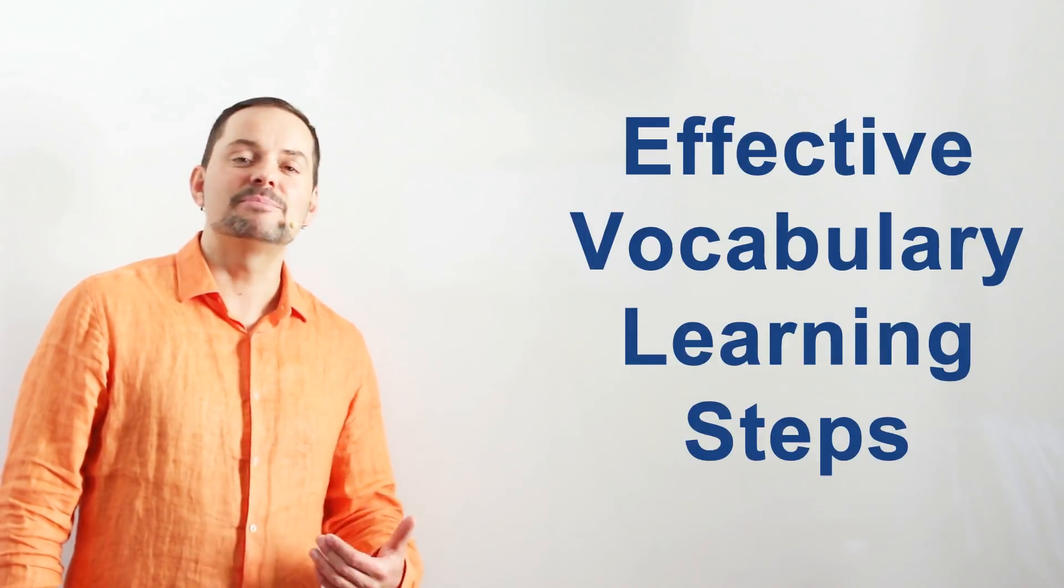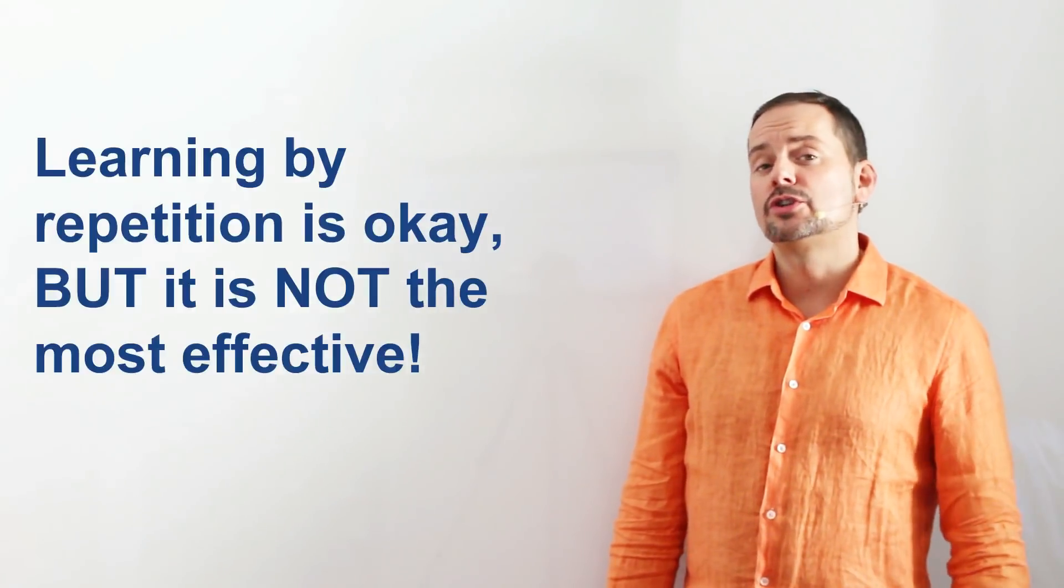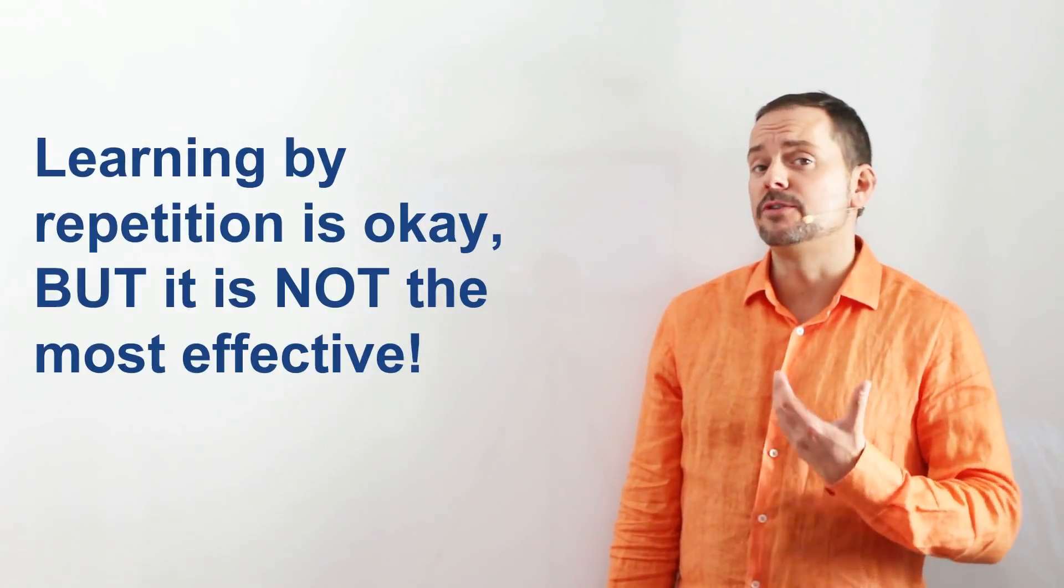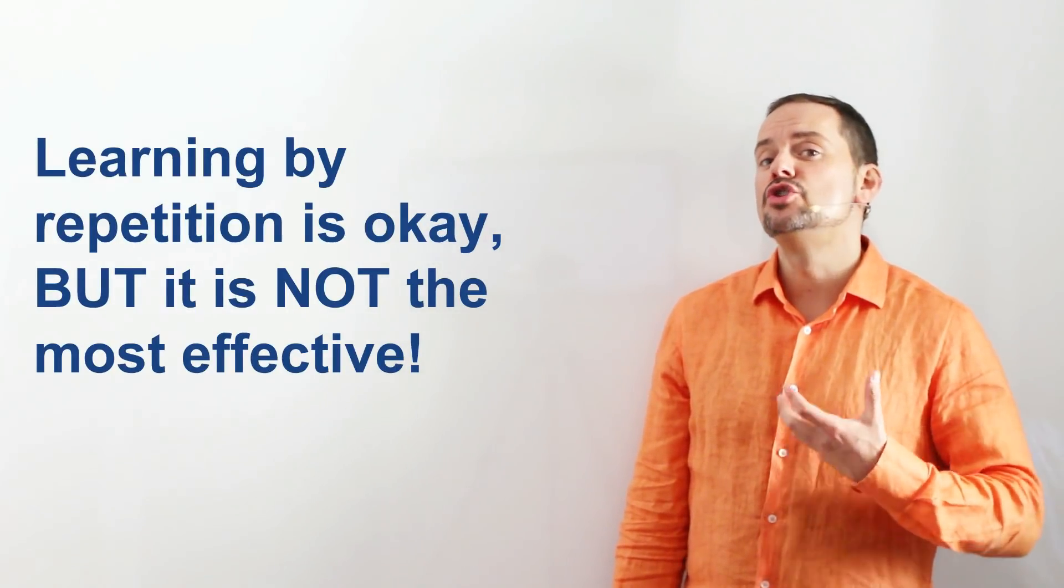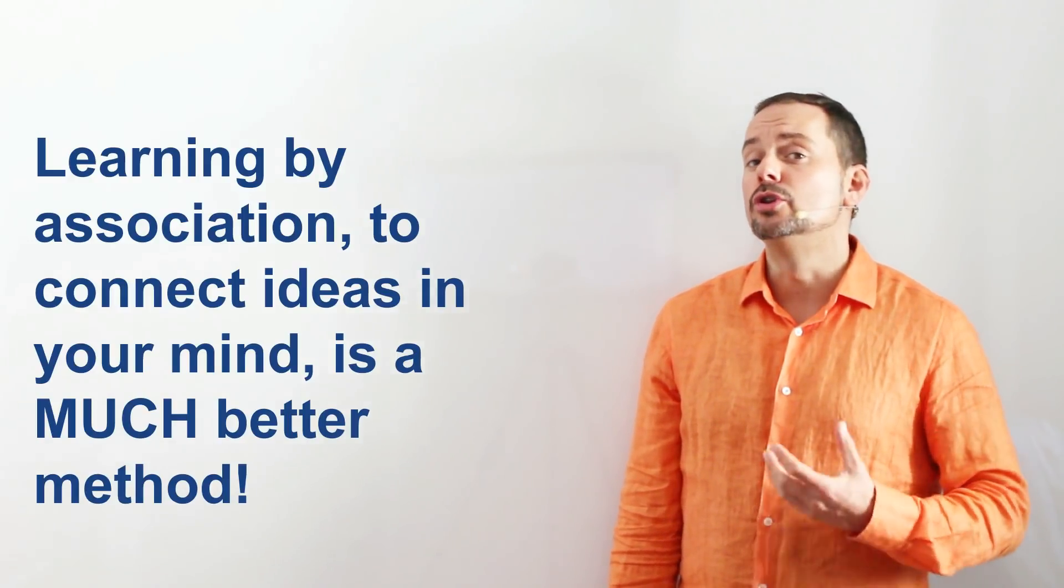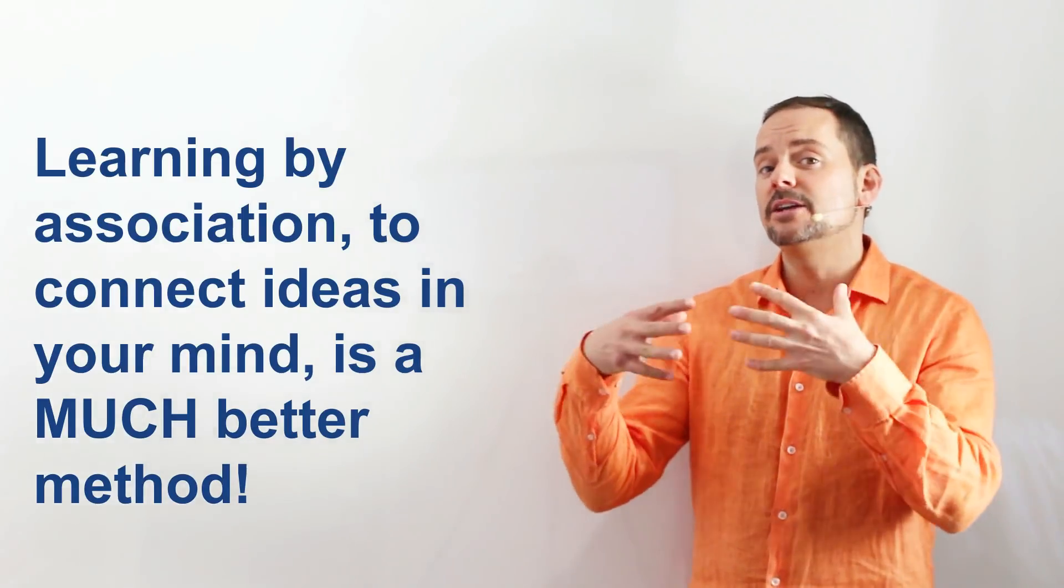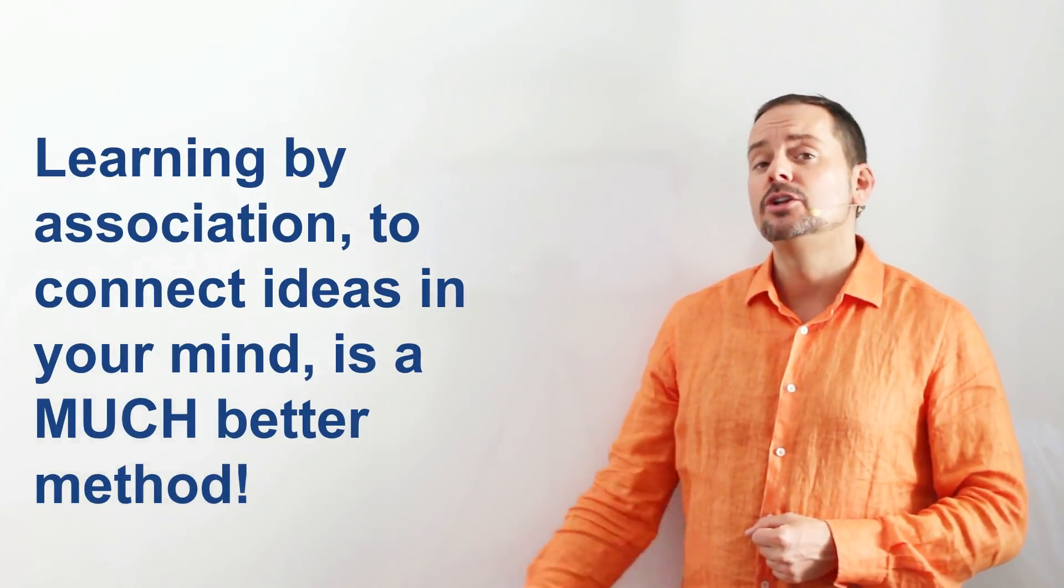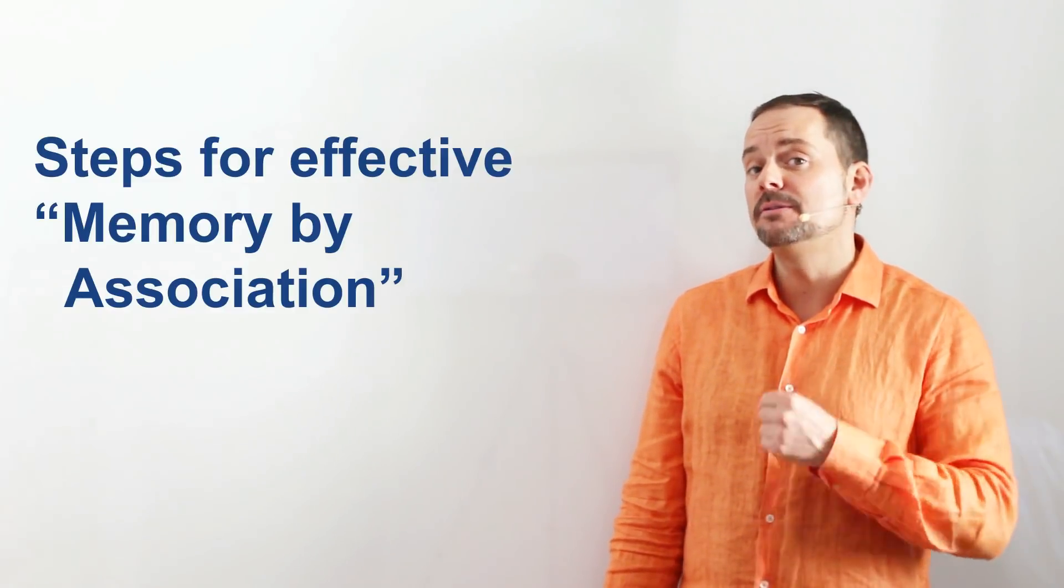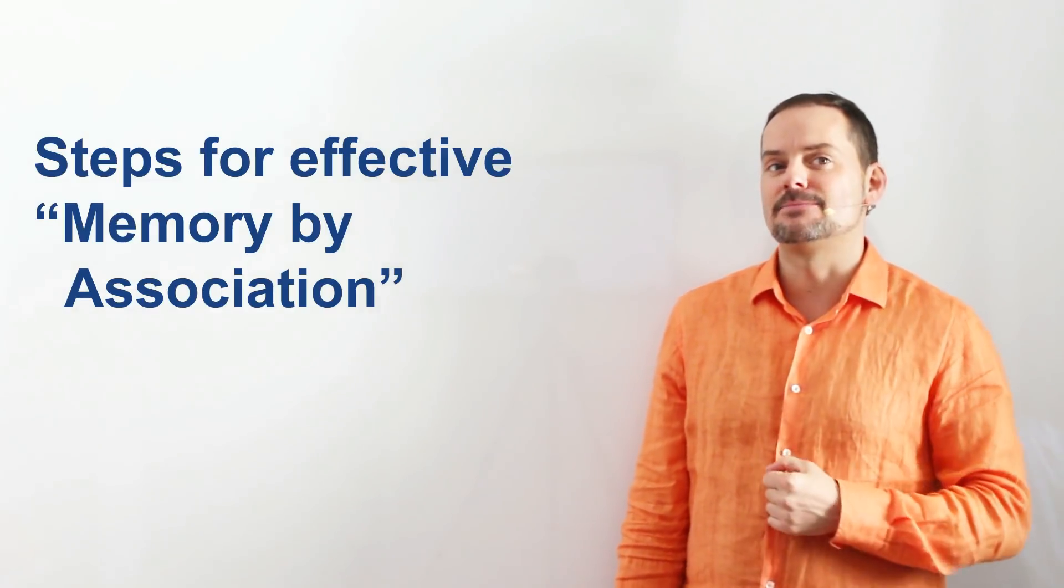Now for the steps to learn vocabulary effectively. Learning new words through repetition or rote memory is okay. This means saying the word a few times over and over, but this is not the best way for the human brain. It's much better to learn new vocabulary through association. That means to connect new vocabulary to existing information in the brain. Here are a couple of steps that will help you pick up new words effectively in this method.